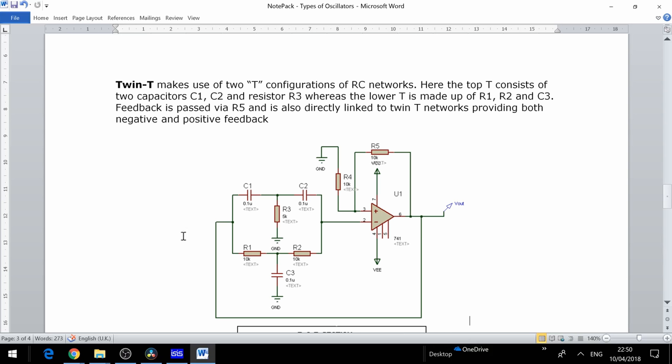Another advantage of the twin T oscillator is it's very stable over a narrow frequency, but it can be very difficult to adjust due to these two elements having to be matched. And if you're adjusting either one of these values it does need to be adjusted at the same time. Although you can get dual gain capacitors, it's very difficult to get dual gain capacitors and resistors.